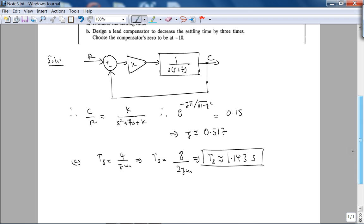Note that zeta is 0.517 implies k is, for this, is 45.84. We also found this last time. That's done, but now we want to design a lead compensator to decrease the settling time by a factor of 3.